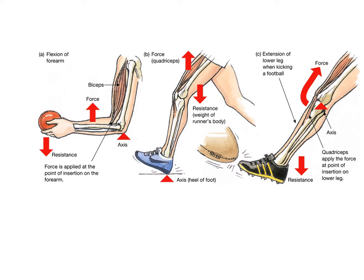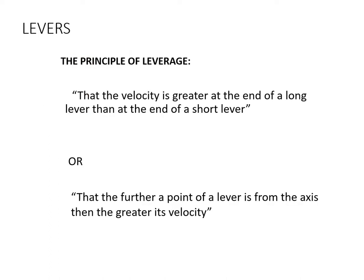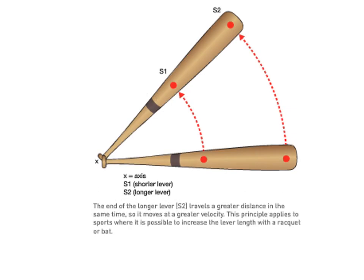Remember the acronym ARF — it identifies what's in the middle of the lever: first class has Axis in the middle, second class has Resistance, and third class has Force. The arrangement on the outside is irrelevant. The principle of leverage and mechanical advantage builds on this logic: velocity is greater at the end of a long lever than a short lever, and the further a point on the lever is from the axis, the greater its velocity.